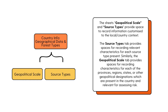Next, we have the Country Information, Geographic Data, and Forest Types tabs. This encompasses the Geopolitical Scale tab and the Source Type tab. Both of these sheets provide space to record information customized to the local or country context. The Source Types tab provides space for recording relevant characteristics for each source type present. Similarly, the Geopolitical Scale tab provides spaces for recording characteristics for each of the provinces, regions, states, or whatever other geopolitical designations are present in the country and relevant for assessing risk.